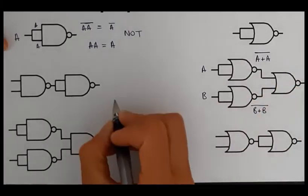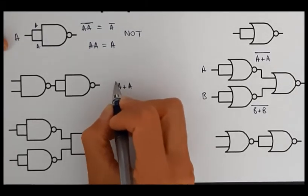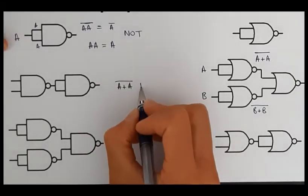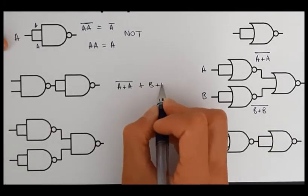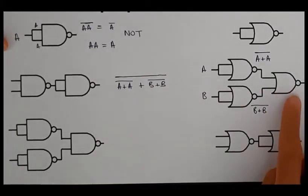So these are going to be NORed together. So I've got (A + A)̅ NOR (B + B)̅ and the whole thing is NOTted. Now this is my output here.